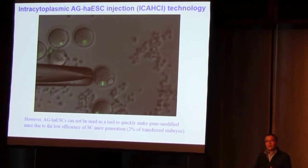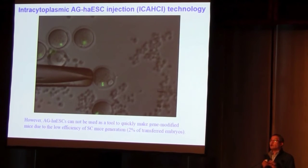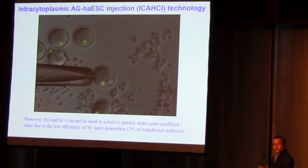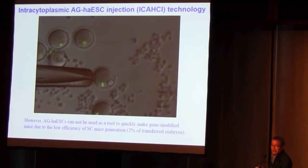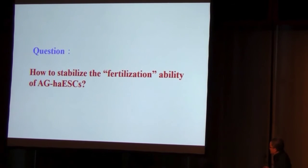So actually in this study, we produced a new concept: we can generate cultured sperm by nuclear transfer technology. However, the efficiency is very low, so this concept cannot yet become a tool because of the low efficiency. In the next few years we tried to stabilize and improve the fertilization ability of our haploid cells.